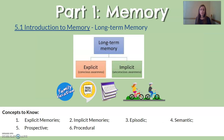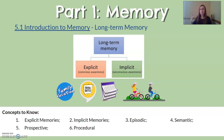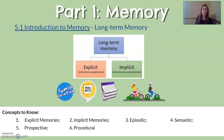Next are long-term memories — any information you keep and can go back and retrieve. There are two types: explicit and implicit. Explicit memories are any memory where you have conscious awareness that you are making the memory and even that you are pulling it back out. Implicit memories are memories you're not necessarily aware you're making, and often not aware when you're retrieving them.